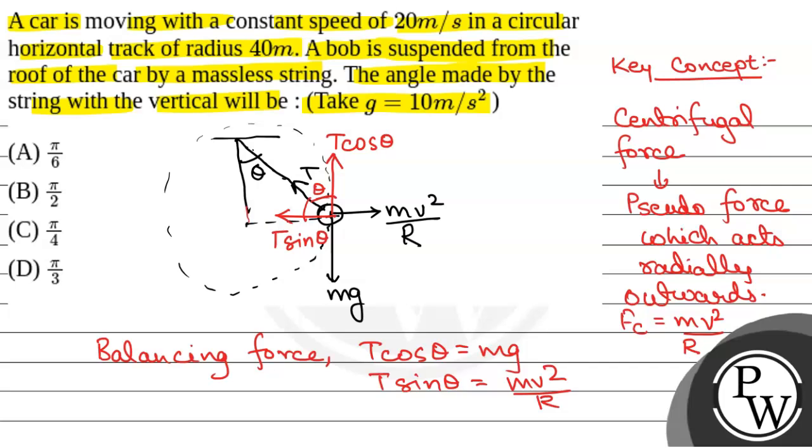Here r will be equal to 40 meters, as the circular radius is 40 meters, and v will be equal to 20 meters per second. We are balancing forces because of constant speed, so there is no acceleration. And we have T will get cancelled out. So call this as equation 1 and this as equation 2. So we will divide equation 1 by 2.